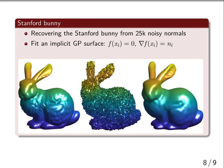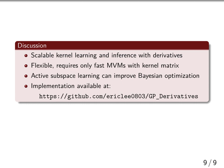In summary, we have shown that scalable kernel learning and inference is possible with derivative information. It only requires fast-MVMs with a kernel matrix. We combine this with active subspace learning to improve Bayesian optimization. You can find an implementation at the link below, and please come visit our poster if you are interested.